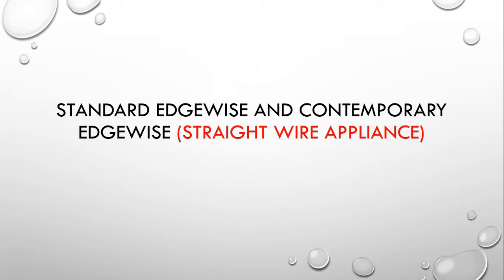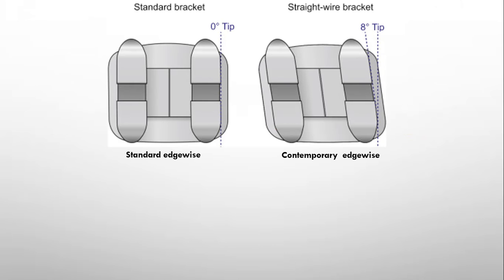Now the same question that what is the difference between standard edgewise and contemporary edgewise which is also known as straight wire appliance. Before explanation, let's see this picture. On my left hand side, this is standard edgewise which was invented in 1920s. While over my right hand side, this is a straight wire bracket or contemporary edgewise bracket. There is no difference in the slot of both the brackets but you can appreciate that the difference is just in the angulation. This bracket is more angulated. However, standard edgewise is straight.